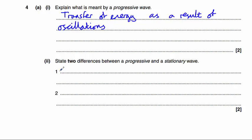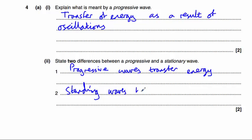Part 2 asks us to state two differences between a progressive and a stationary wave. There are lots of good answers you could have here. Two particularly easy to remember ones will be that progressive waves transfer energy and that standing waves have nodes and antinodes.